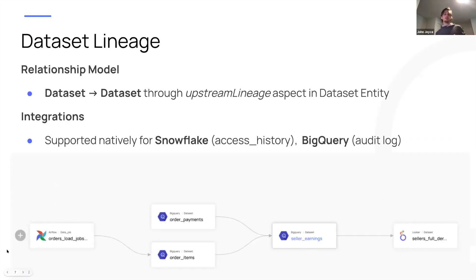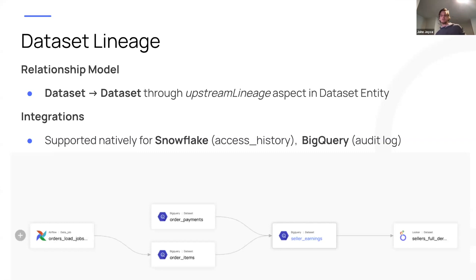The most important type of entity-to-entity lineage right now is dataset-to-dataset lineage. We model that through the upstream lineage aspect, which is attached to the dataset entity, allowing you to see relationships between datasets. Currently, we have two notable integrations where we can extract that information automatically: Snowflake, using the access history log, and BigQuery, where we use the audit log.